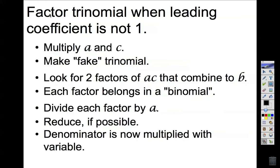Now we're going to factor a trinomial when the leading coefficient is not 1. In order to do that, we're going to multiply a and c — this creates our fake trinomial. Using the fake trinomial, we look for two factors of a times c that combine to make b. Each of those factors belongs in a binomial. After that, we divide each factor by a and reduce if possible. If we still have a fraction, the denominator is going to be multiplied with the variable for that binomial. I like calling this method 'bottoms up,' because whatever we have at the bottom as our denominator comes to the top to multiply with the variable.